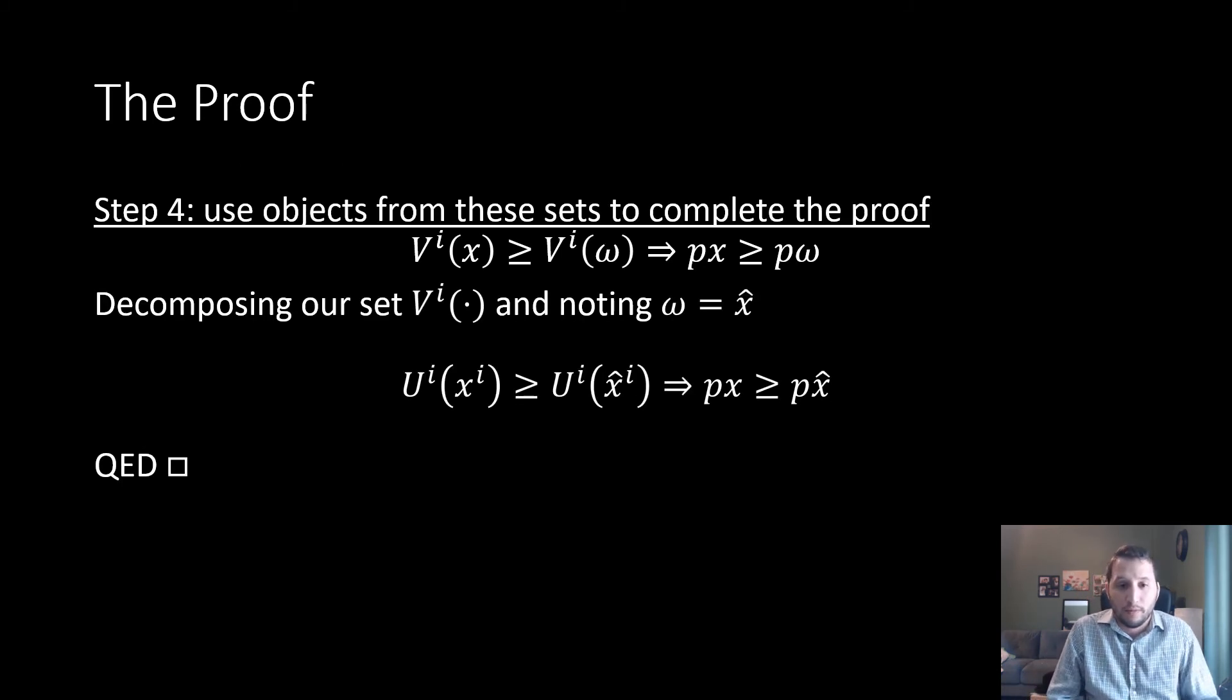Next, we've already used our separating hyperplane theorem, and we're going to use our objects from our sets to complete this proof. Now we have the following result. Remember in step one we noted that this ω is going to be equal to x̂. I just dropped out the sum notation here to keep things in vector form.